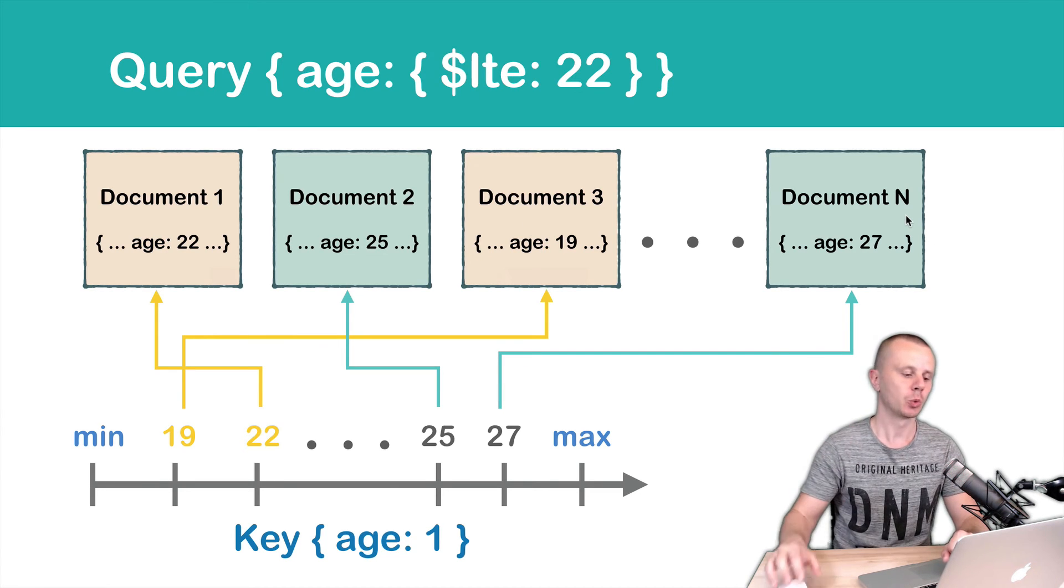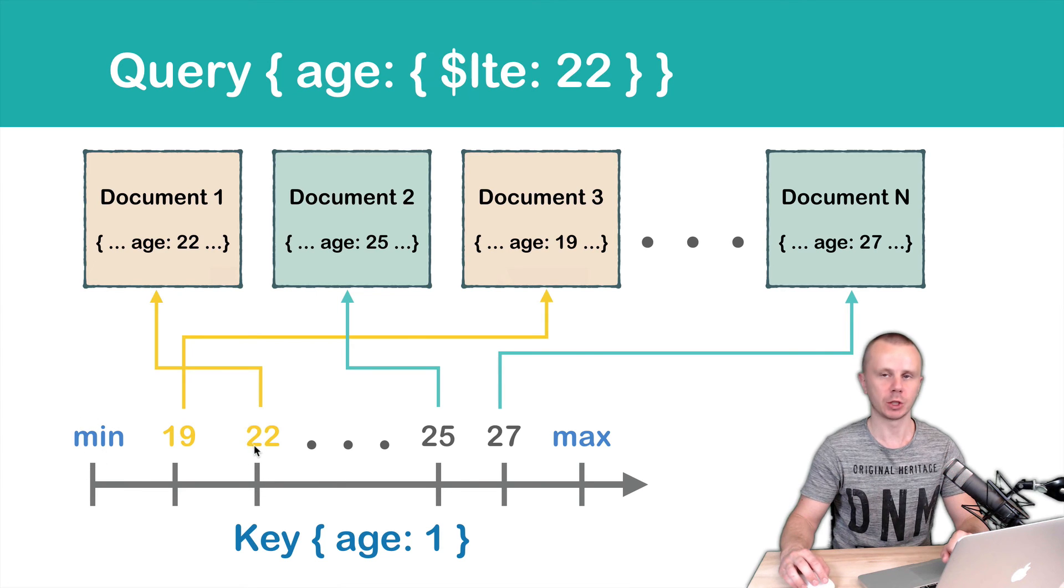So we simply scan the index, find values from minimum to 22, get pointers from those values to the documents, and retrieve those documents from the database.